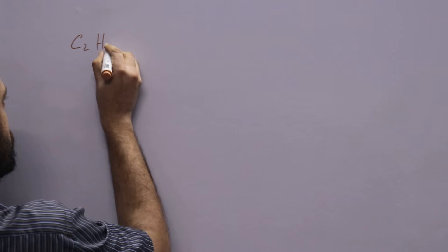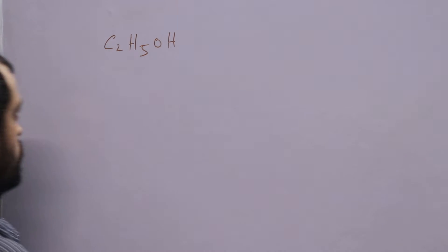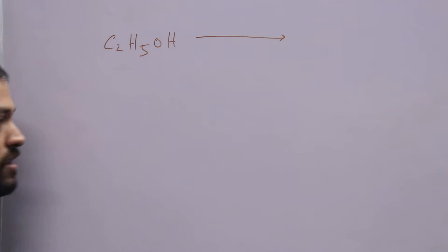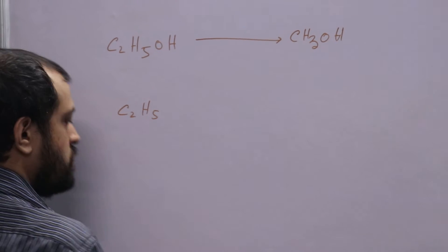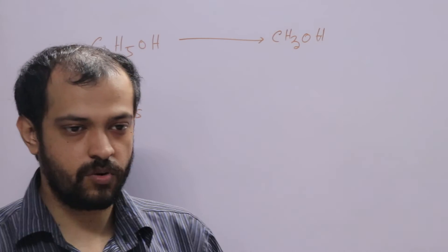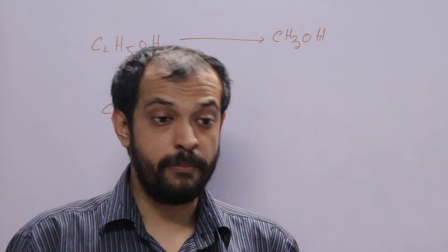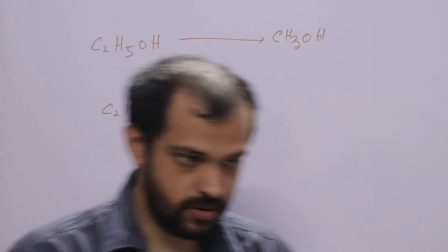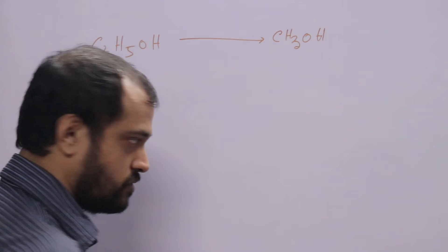Suppose we are dealing with ethyl alcohol or ethanol. We want to convert it to methanol. Remember always that whenever you are told to convert one thing to another, you will have to follow at least 4 steps and at most 4 steps. That means maximum or minimum will be 4 steps. We will have to finish the conversion in 4 steps.